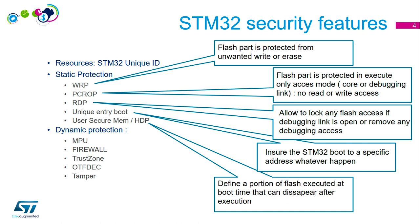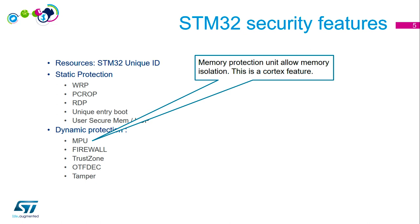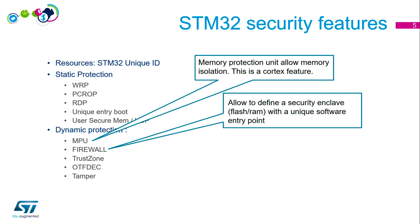For dynamic protection, we have the MPU — memory protection unit — which if you're familiar with Cortex, you'll know. It allows memory isolation. Then there is the Firewall, which allows you to define a security enclave covering flash and RAM with only one unique software entry point. When you want to enter that region, you must go through that single entry point.